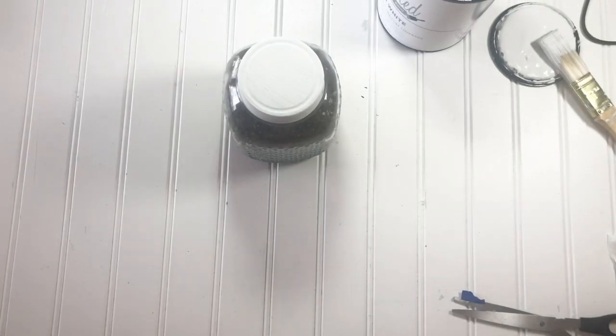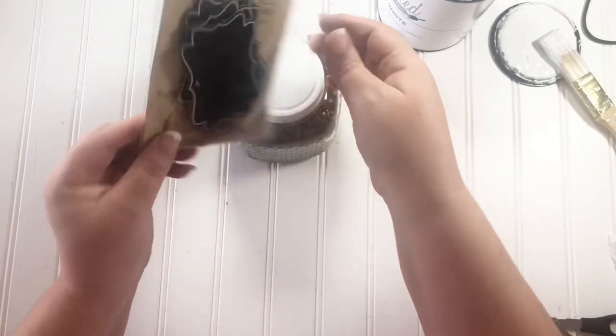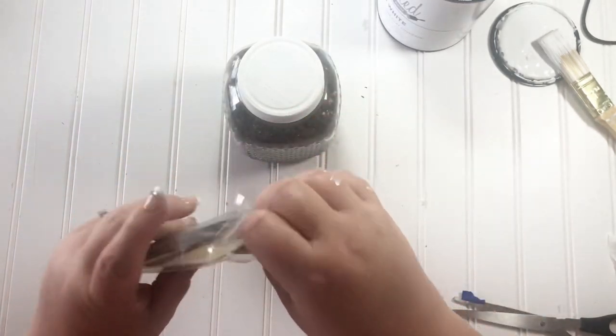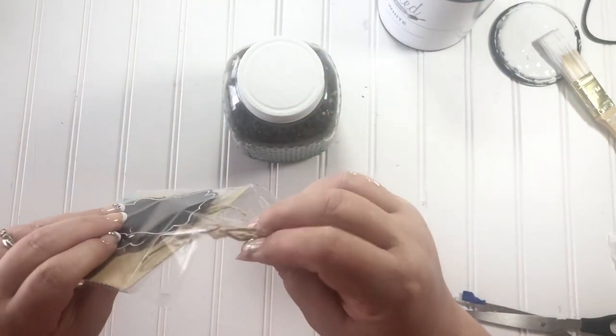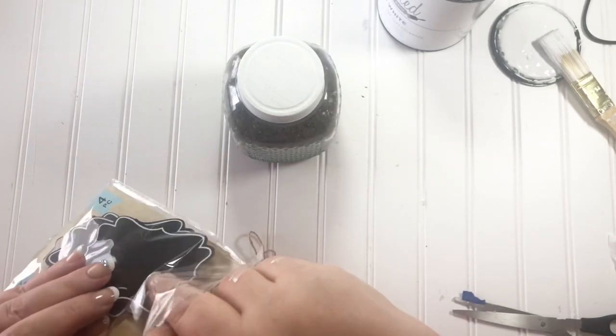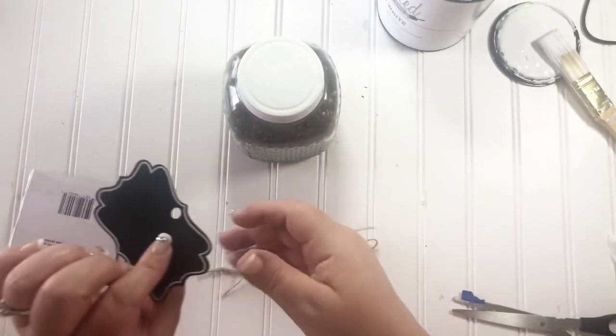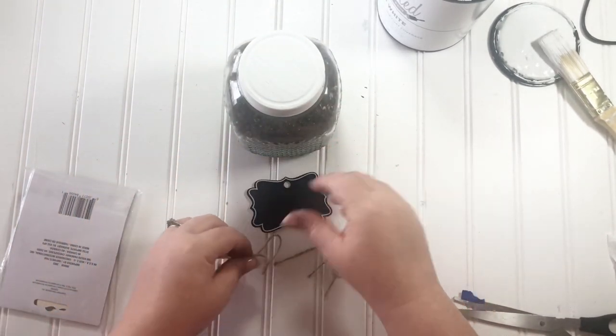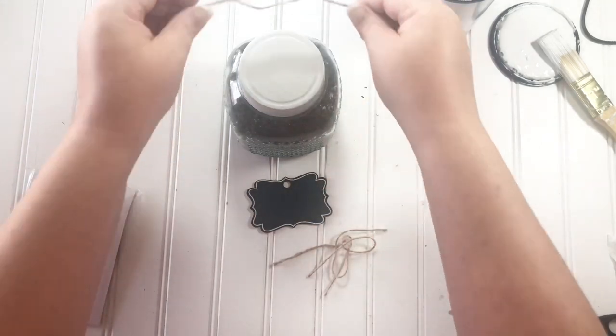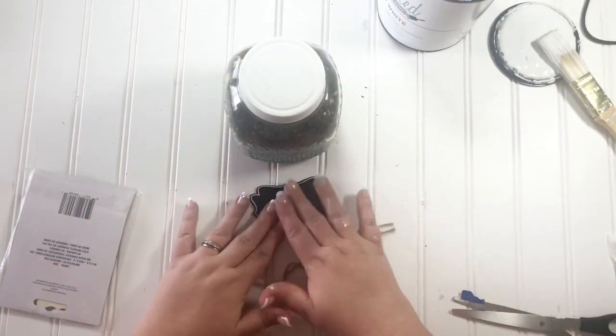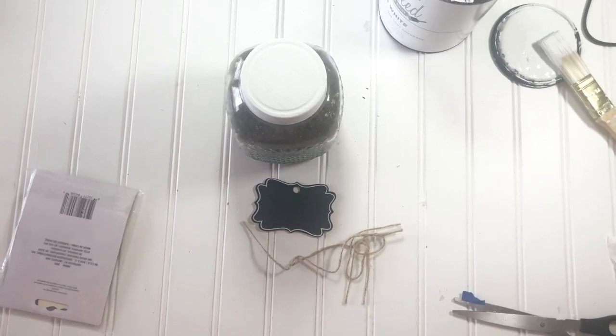But I'm not stopping there. I'm using these chalkboard tags that are from the Dollar Tree. They have different kinds, different sizes, any one of them will do. But I picked this one because I thought that the size of it matched the size of my jar better. They do come with these little pieces of jute string that you can tie with, but obviously that doesn't fit around my jar so I had to use my own jute string.